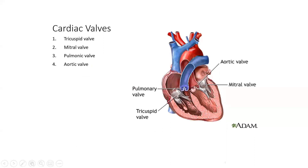This is the tricuspid valve — this white fibrous piece of structure here. It separates the right atrium from the right ventricle. The valve opens and allows the blood from the atrium to go into the ventricle. The ventricle must be relaxed in order to receive the blood. This process is called diastole — relaxation of the ventricle so it can receive the blood.